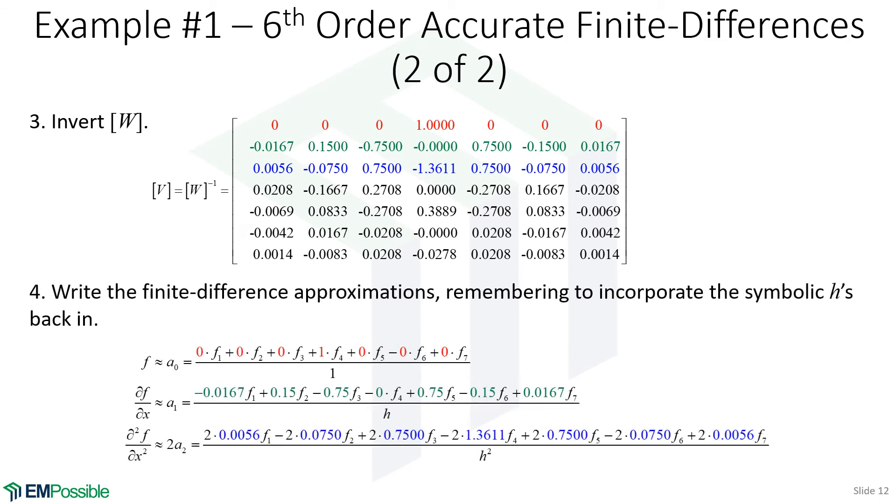Now we can immediately write our finite difference approximations. We just have to remember to divide by H or divide by something we'll get into. This first row is essentially our A₀ polynomial coefficient. It's just those numbers multiplying all of our F's. For this first one, where we're interpolating the function itself, we just divide by 1.